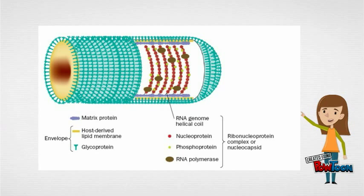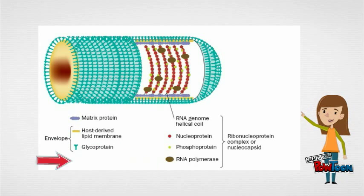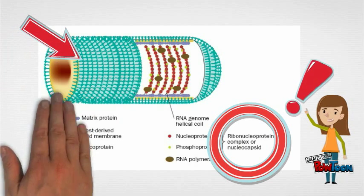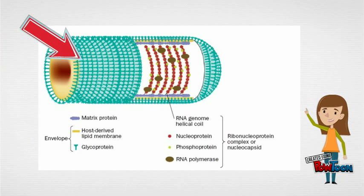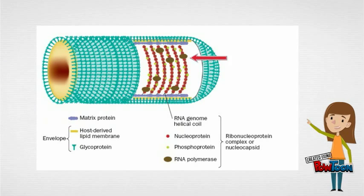In the RNP, genomic RNA is tightly encased by the nucleoprotein. The phosphoprotein and the polymerase are both associated with the RNP. The glycoprotein forms approximately 400 trimeric spikes which are tightly arranged on the surface of the virus. The M protein is associated with both the envelope and the RNP.